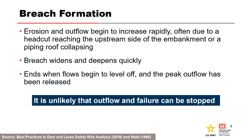The breach formation phase begins when erosion and outflow begin to increase rapidly, often due to a headcut reaching the upstream side of the embankment or a piping roof collapsing. During this rapid downcutting phase, the breach widens and deepens quickly. It ends when flows begin to level off and the peak flow has been released. It is unlikely that outflow and failure can be stopped.